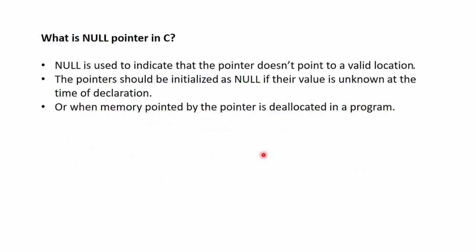Next question: what is a null pointer in C? Null is used to indicate that the pointer doesn't point to a valid location. Pointers should be initialized as null if their value is unknown at the time of declaration or when the memory pointed by the pointer is deallocated within a program.